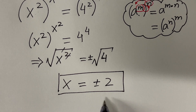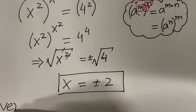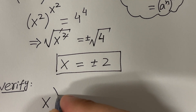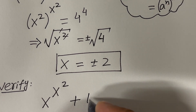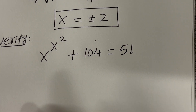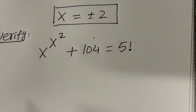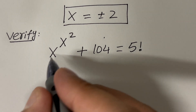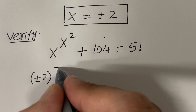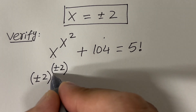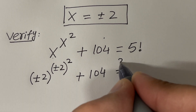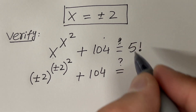It is so satisfying to box the answer! These are the two solutions, but let's see if they satisfy the given equation. The given equation is x raised to the power x raised to the power 2, plus 104, equal to 5 factorial. Let's plug in plus or minus 2. We have plus or minus 2 for each x, plus 104 — is this equal to 5 factorial, which is 120?